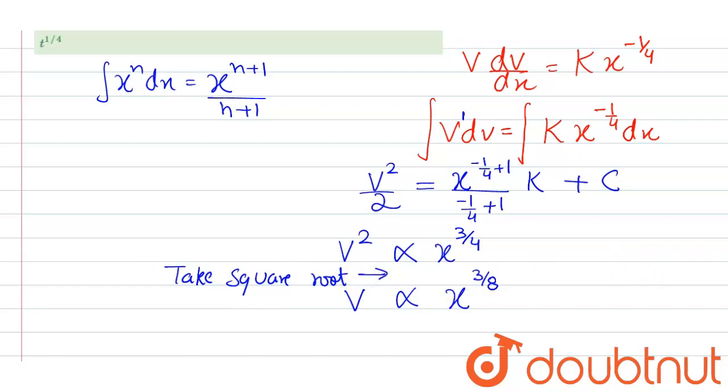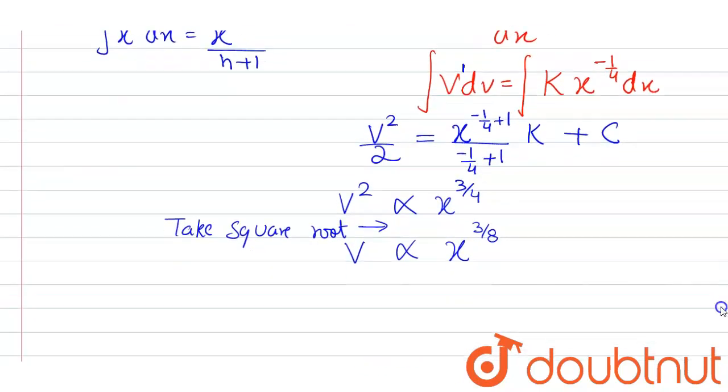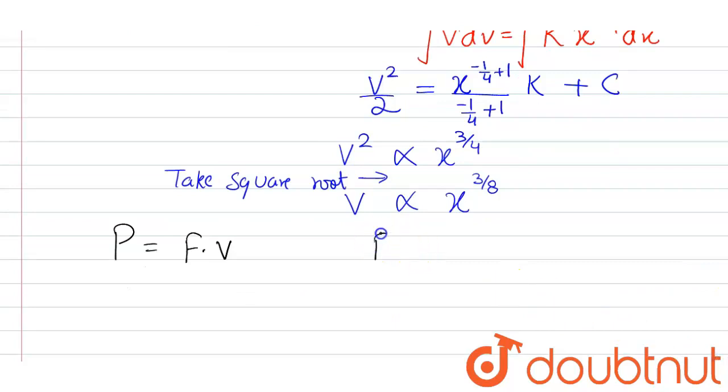Now we have to determine about power. So power can be written as force into velocity. And force is written F is directly proportional to x to the power minus 1 by 4. So we can write power is directly proportional to x to the power minus 1 by 4. And for V it is x to the power 3 by 8.